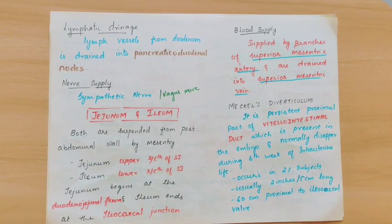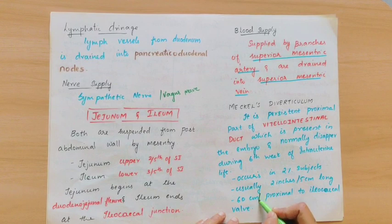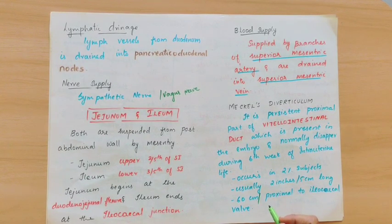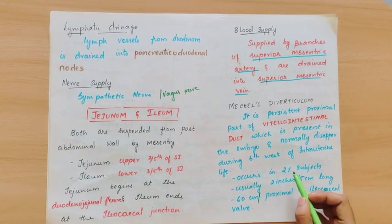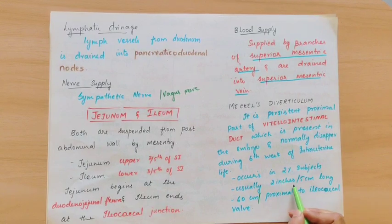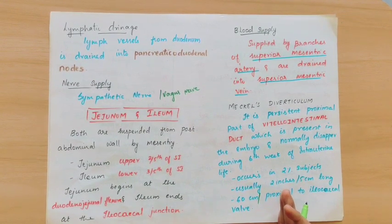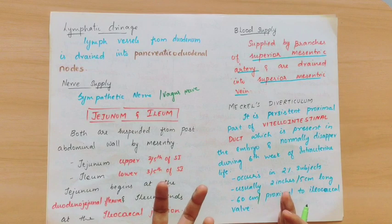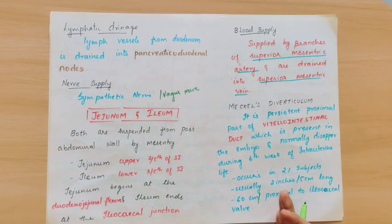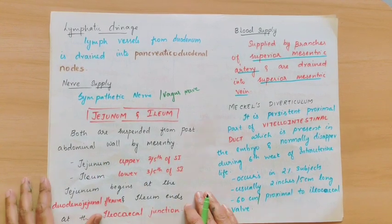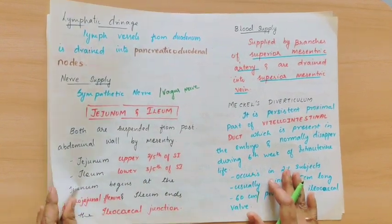Meckel's Diverticulum follows the rule of 2s: 2% of individuals are affected, it is usually 2 inches long, and it is located 2 feet away from the ileocecal junction — that is 2 feet, otherwise 60 centimeters. So everything is in 2s: 2% of subjects, 2 inches long, 2 feet away from the ileocecal junction. If a Meckel's Diverticulum is present and there is any complication, food particles can deposit, leading to inflammation and infection.